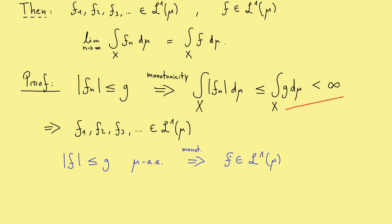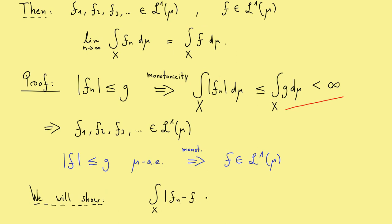So the first part of the theorem was very easy to show. The crucial thing in the theorem is indeed this convergence statement. In fact, I want to show something a little bit stronger: we will show that the integral of the absolute value of fn minus the pointwise limit f goes to zero as n goes to infinity, and from this we can immediately conclude the property we want.